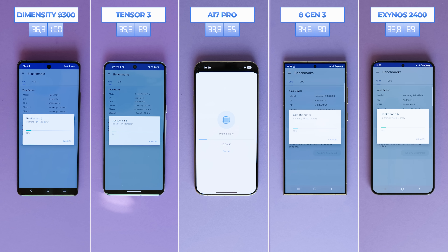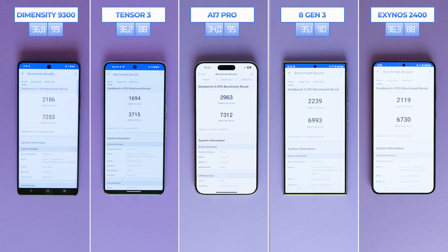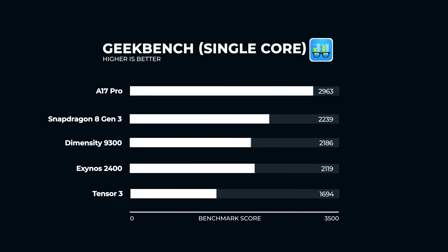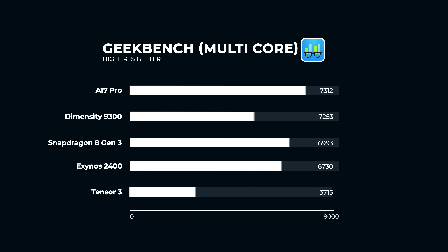Geekbench tests device functionality and benchmarks the CPU by modeling real-world usage. One of my favorite things is that it gives you single-core and multi-core scores separately. For single-core scores, the A17 Pro takes the top spot, followed by the 8 Gen 3, the Dimensity, the Exynos, and lastly the Tensor. Looking at multi-core scores, the A17 Pro is still the leader, close to the Dimensity. Next is the 8 Gen 3, the Exynos, and the Tensor. The difference between the Tensor and the rest of the chipsets is quite significant.